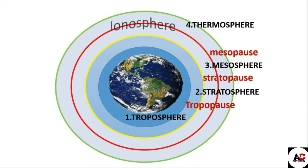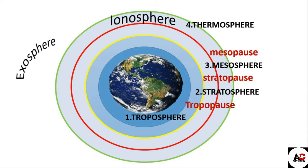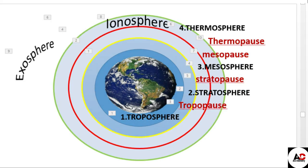The thermospheric layer is divided into two layers: the ionosphere and the exosphere. The boundary between the ionosphere and the exosphere is the thermopause. The ionosphere extends from about 80 km to 400 km from Earth's surface, while from 400 km to thousands of kilometers above Earth's surface is the exosphere.